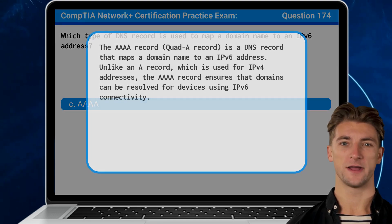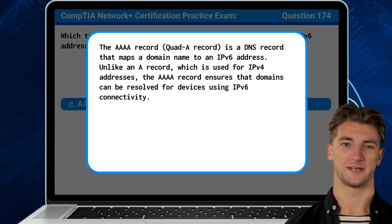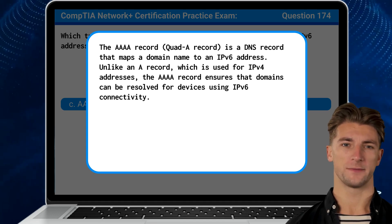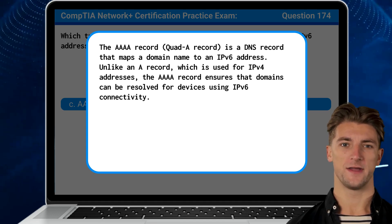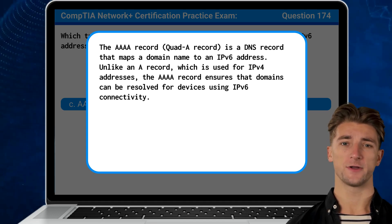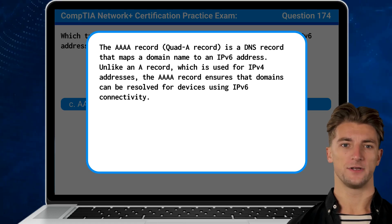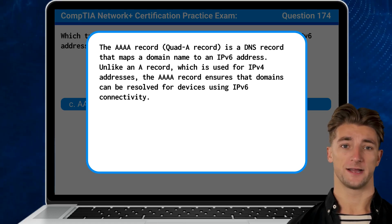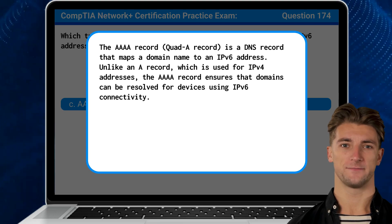The Quad A record is a DNS record that maps a domain name to an IPv6 address. Unlike an A record, which is used for IPv4 addresses, the Quad A record ensures that domains can be resolved for devices using IPv6 connectivity.